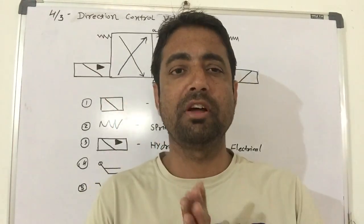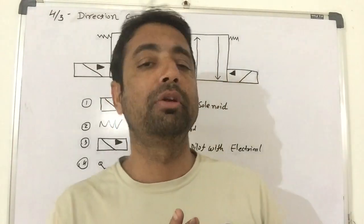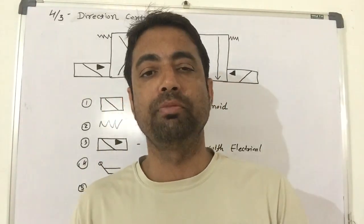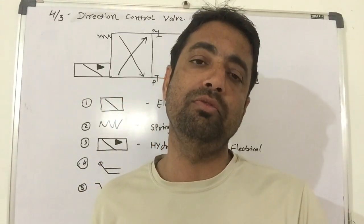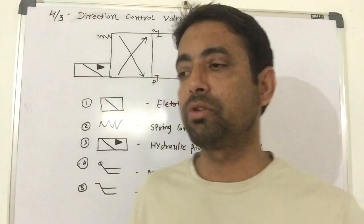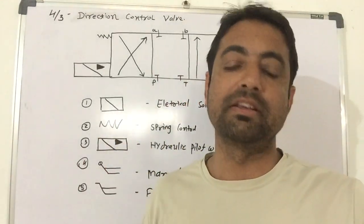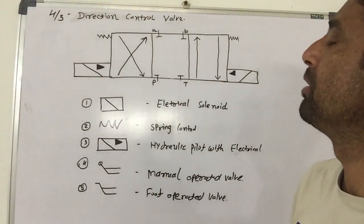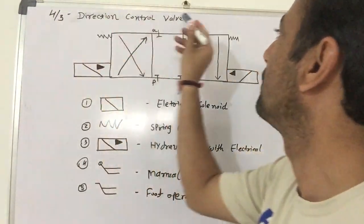Hello friends, I am Kuldik. Today, I will tell you about hydraulic direction control. The basic hydraulic, which is DC or pneumatic, how do we read? As you are seeing the symbol, we have written 4 by 3 direction control.